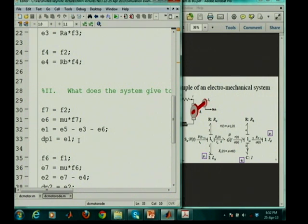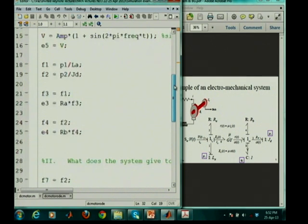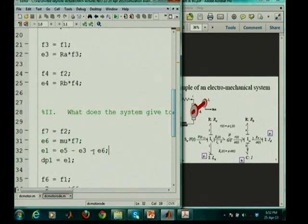So, what does the system provide to this? It gives effort 1 which is actually rate of change of the angle of the electrical momentum. And that is DP1 is equal to E1. What is E1? E1 is E5 minus E3 minus E6. That is E5 minus E3 minus E6. What is E6? What is E5? E5 has already been defined earlier. It has been defined earlier on line 16. So, we need not worry about it. What about E3? E3 has been defined earlier on line 22.